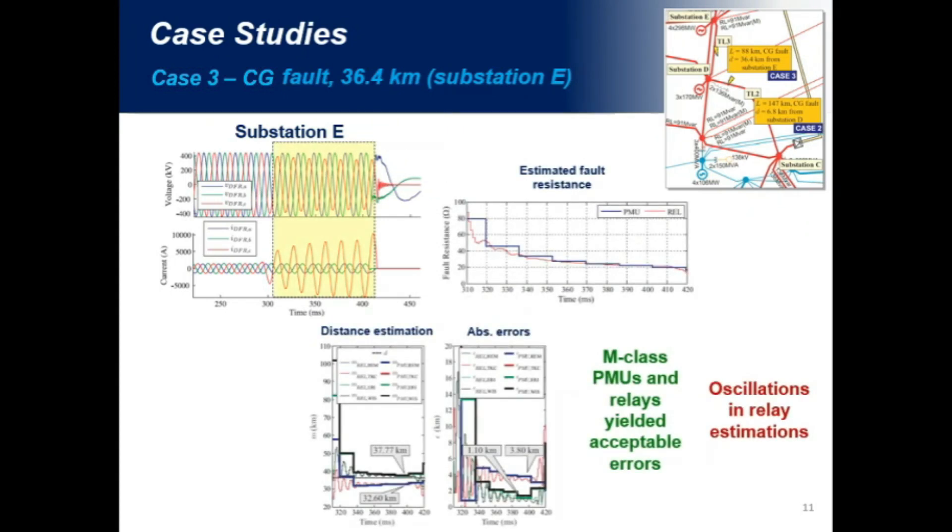Finally, analyzing the case three, we can see that this is a typical high resistance fault. We can see that the current here increases gradually, but even considering such a behavior, we could see here that estimations were very accurate. To demonstrate this case in more detail, we show here the estimated fault resistance, and we can see that it starts with a value of about 80 ohms, and it decreases until 20 ohms. But the errors did not exceed the order of 3.8 kilometers, which are acceptable for phasor-based fault location methods.